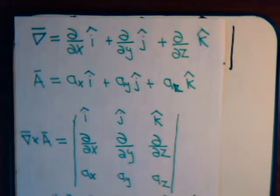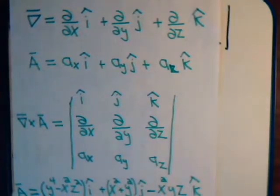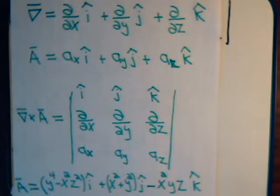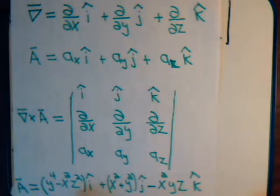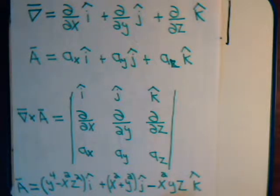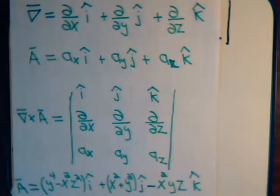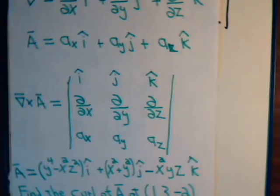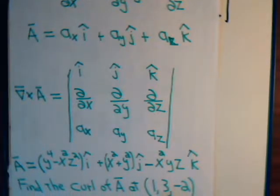Suppose we're in a vector field where the components of vector a have these expressions: the i-th component is y⁴ − x²z², the j component is a given expression, and the k-th component is −x²yz. We want to find the curl of this vector a at the point x = 1, y = 3, z = −2.